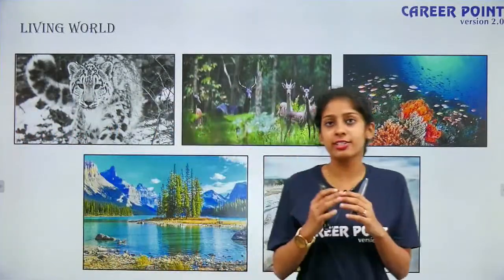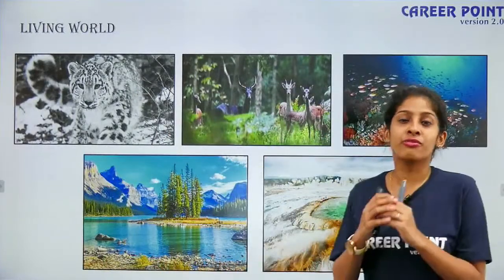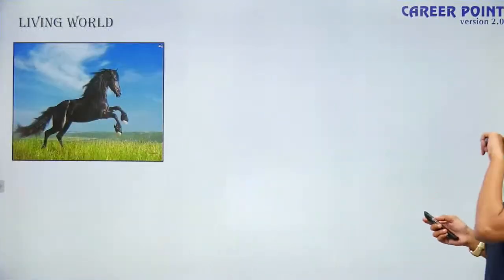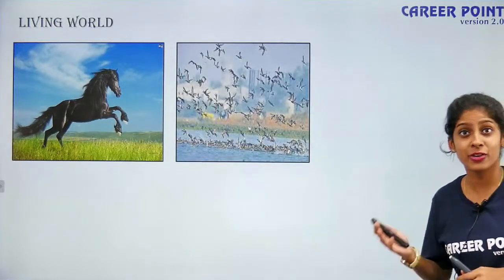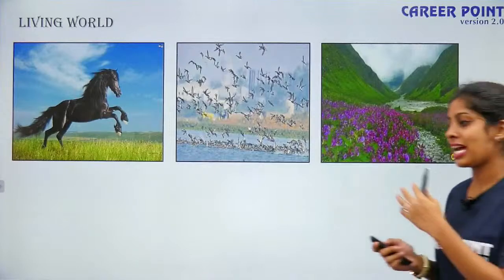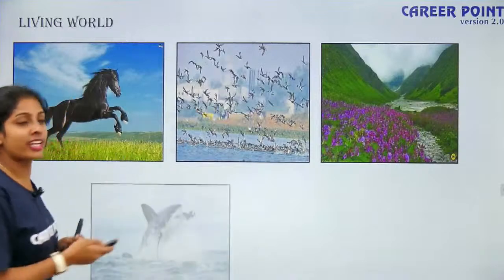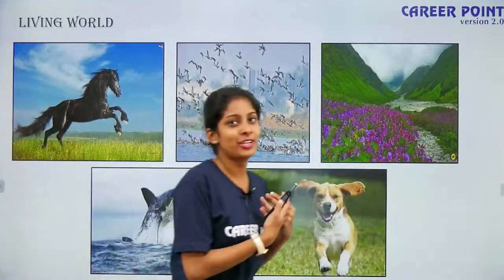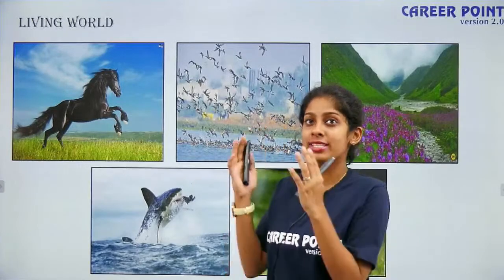All these pictures show that living organisms are everywhere — irrespective of climatic conditions, irrespective of the environment, living organisms thrive. This is a galloping horse, also living. You have migrating birds, also living. A valley of flowers — even that has living organisms. A shark, a whale, and finally a dog. You and I are also living. Living organisms are very diverse and easily correlatable, and now you have an idea about what is Living World.